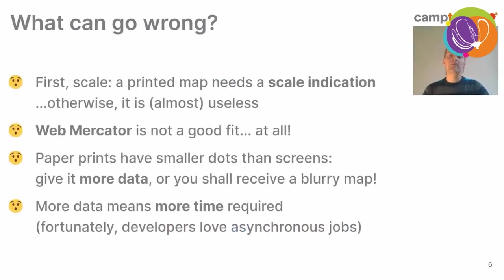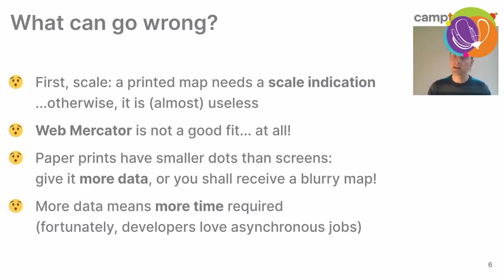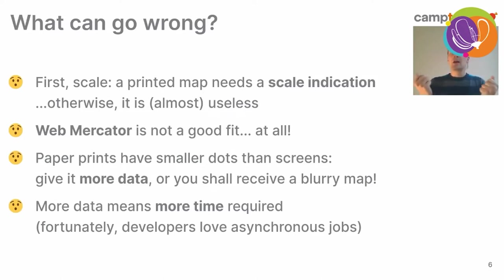Things can be harder than expected when printing a map. There is, first, the issue of scale. When you're on an interactive map in your browser, you sometimes have a scale indication, but you often have measure tools, and this allows you to measure distances pretty precisely. On the paper map, you don't have these, so you need a very precise and accurate scale indication. Also, using Web Mercator projection, which is very common in web maps, isn't a good fit for paper maps because you may have strong distortions. Additionally, printed maps need more dots than maps on a computer screen, meaning you need more detail, more data, and more time to download it.